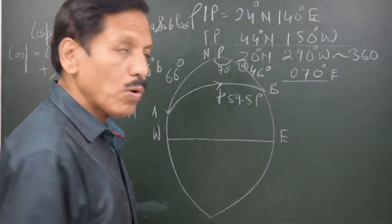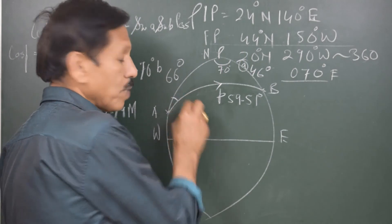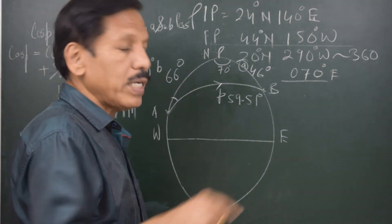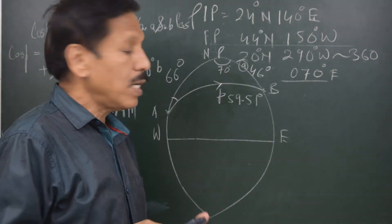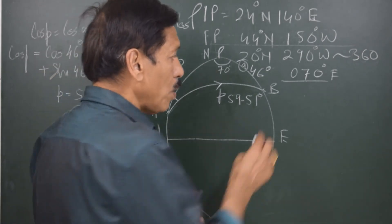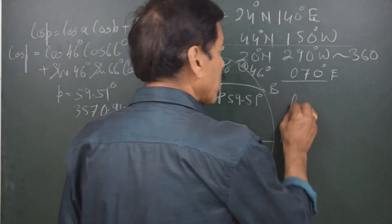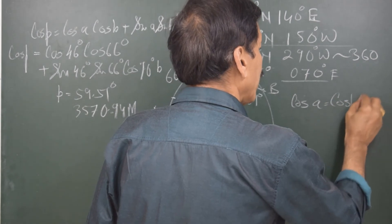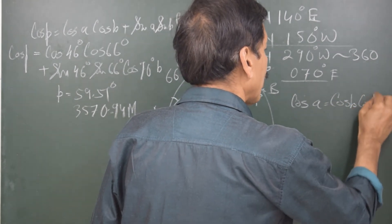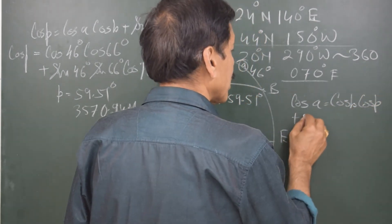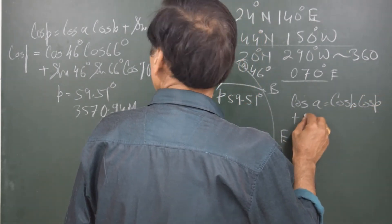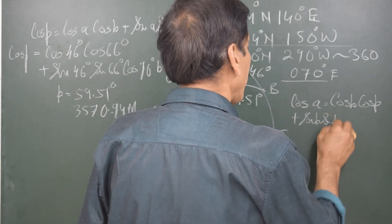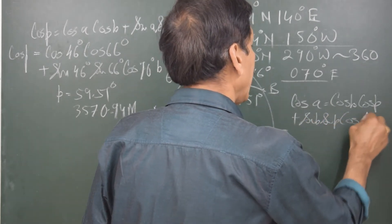Now having found side p = 59.51 degrees, I want to find the initial course, meaning angle A. So I write the formula for small a: cos(a) = cos(b)·cos(p) + sin(b)·sin(p)·cos(A).